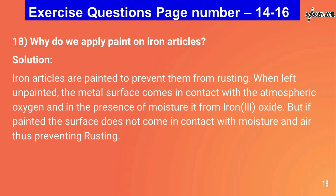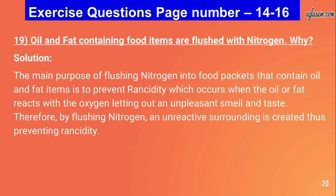Question number eighteen: why do we apply paint on iron articles? Iron articles are painted to prevent rusting. When left unpainted, the metal surface comes into contact with atmospheric oxygen and in the presence of moisture it forms iron(III) oxide. If painted, the surface does not come in contact with moisture and air, thus preventing rusting.